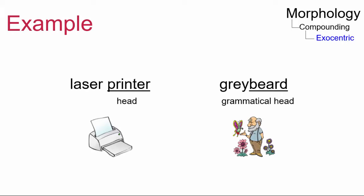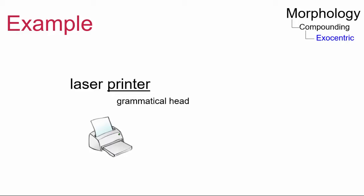Compare these two examples: laser printer and graybeard. In the first example, printer is both the grammatical and semantic head of the compound. Grammatically speaking, printer takes on all the inflectional markers. For instance, laser printer can be pluralized to laser printers. Semantically speaking, a laser printer is a type of printer.